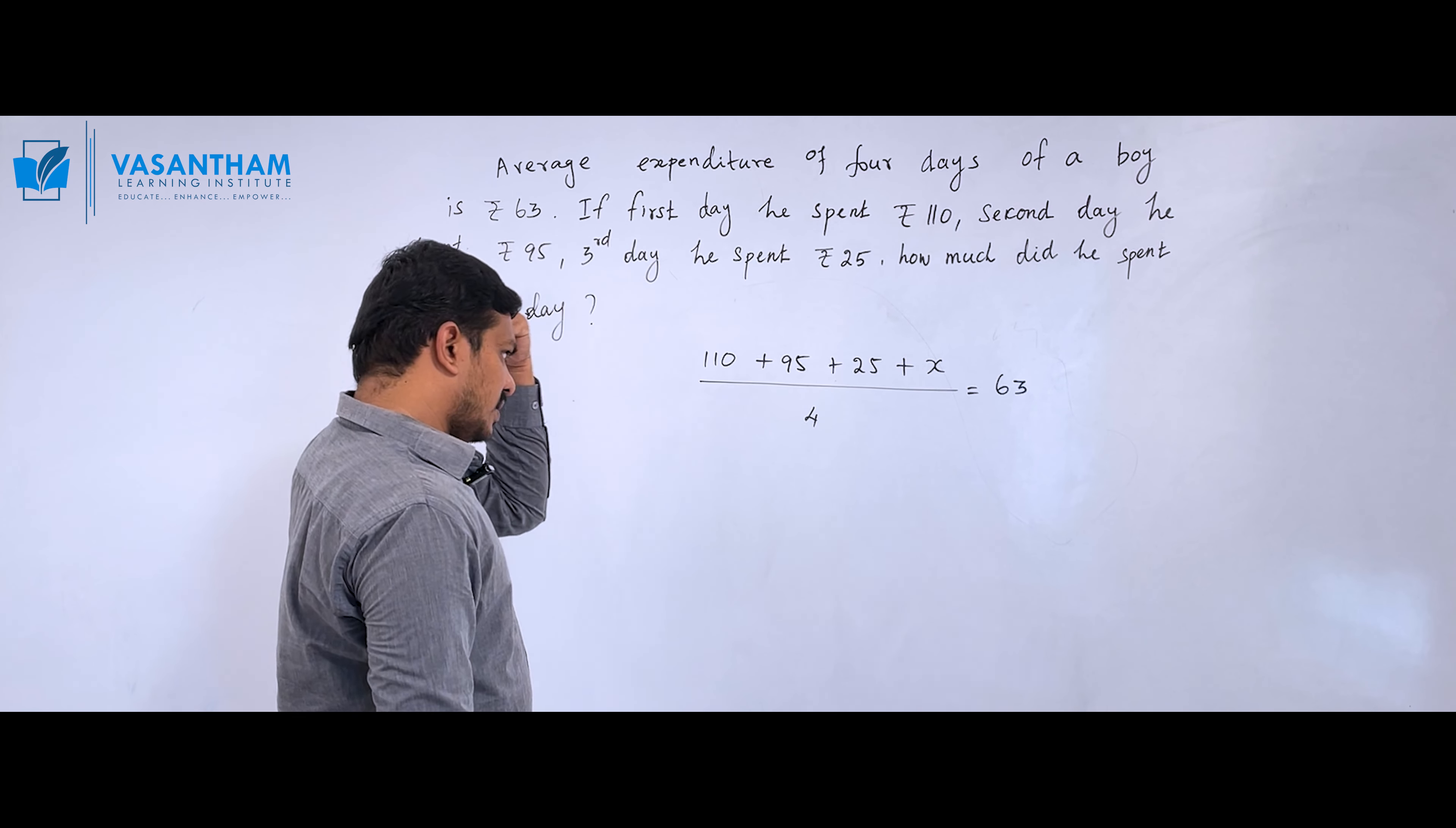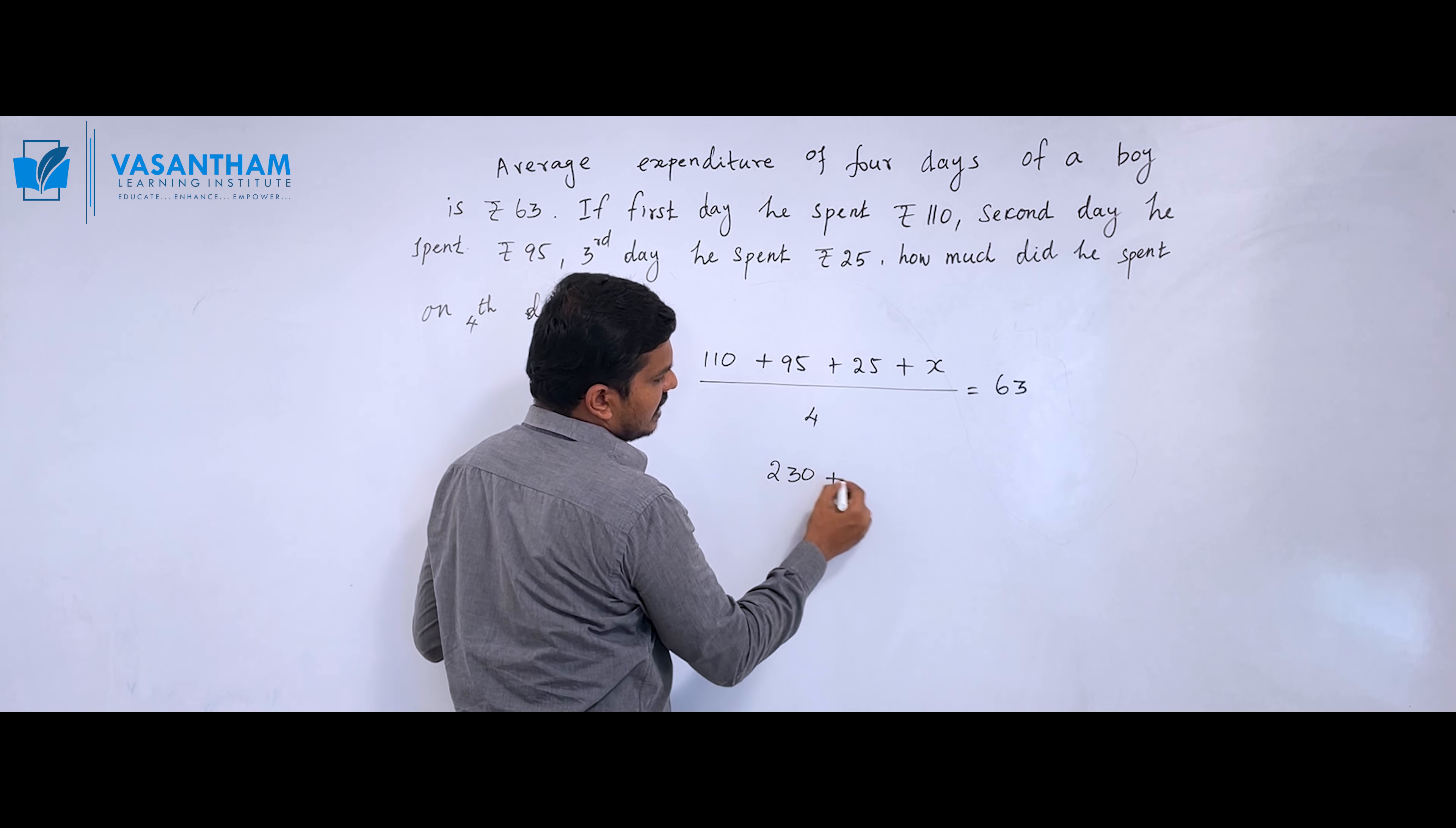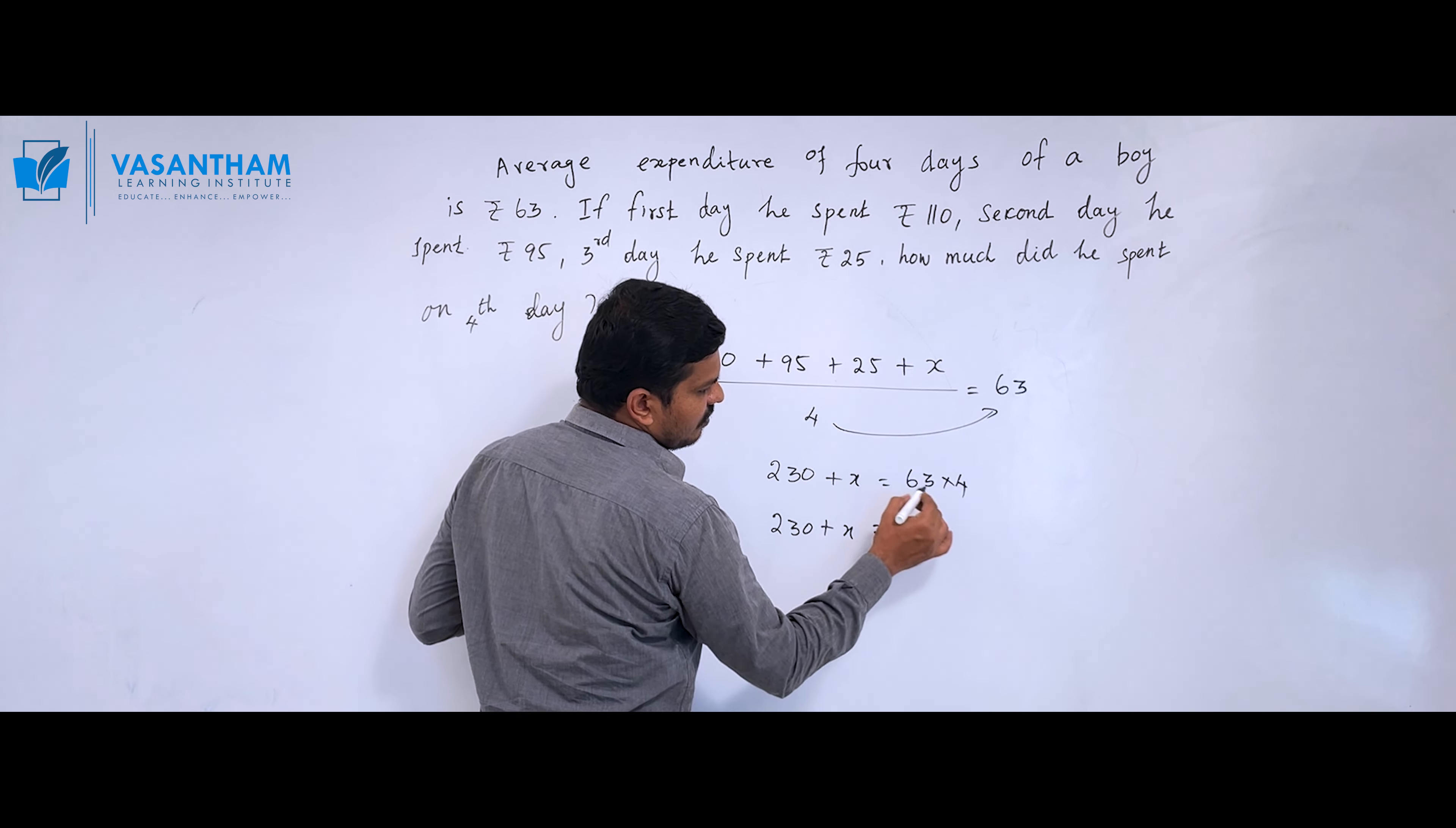If you add these values: 110 plus 95 plus 25 equals 230 rupees. Plus x for the fourth day. This equals 4 times the average. The equation is: 230 + x = 63 × 4.